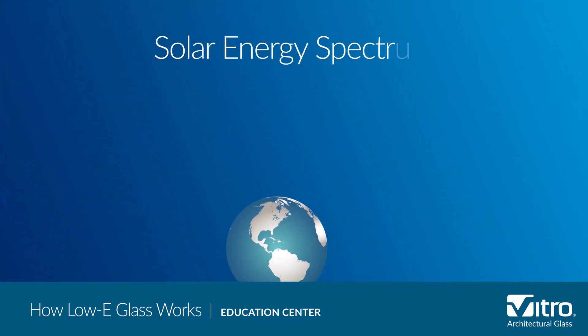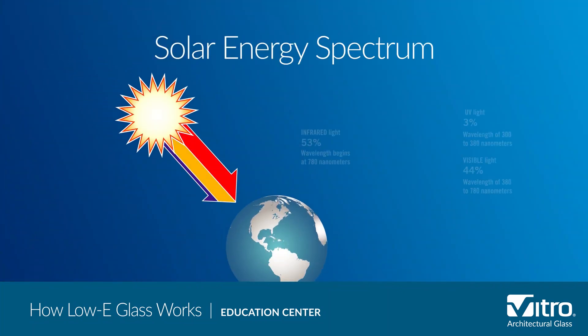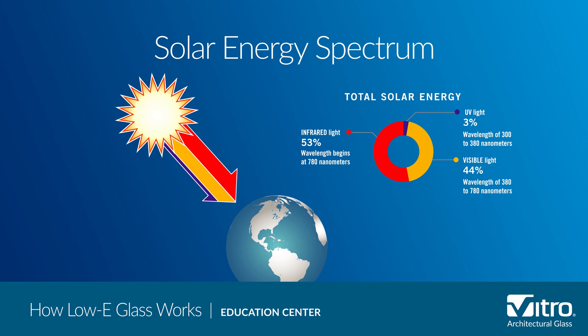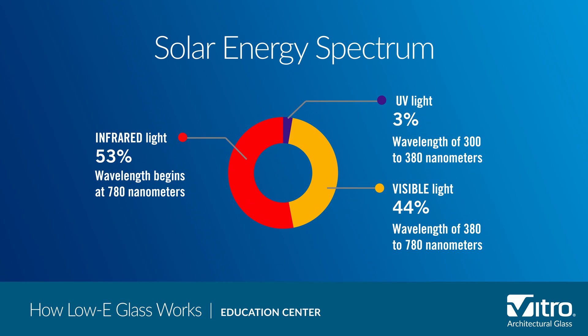Let's begin with a brief overview of the sun's energy spectrum. Ultraviolet light, visible light, and infrared light all occupy different parts of the solar spectrum, and the differences between the three are determined by their wavelengths. Ultraviolet light, which is what causes fabrics and wall coverings to fade, has wavelengths between 300 to 380 nanometers.